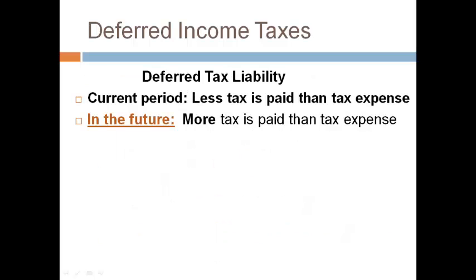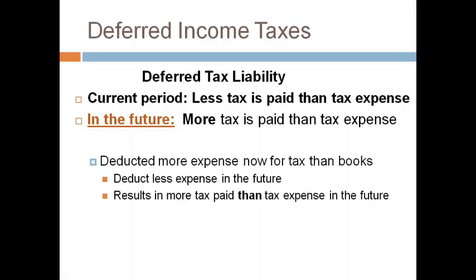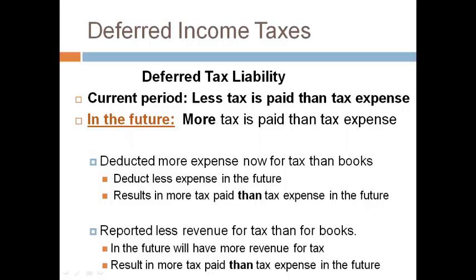A deferred tax liability occurs when more tax will be paid in the future than tax expense — not more than estimated, but more than tax expense. This comes about when an expense deduction is greater for tax than for books in the current year; in the future, the tax deduction will be less and the company will have more taxable income and will pay more tax. It also comes about when a company reports less tax revenue than book revenue. Less tax revenue now means less taxable income now and less tax to pay now, but there will be more tax revenue in the future, creating more taxable income and more taxes to pay. Less tax payable now and more tax payable in the future creates a deferred tax liability.